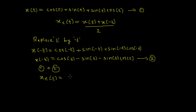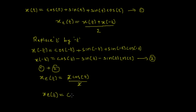xe(t) equals: cosine(t) plus cosine(t) gives 2 cosine(t). Sine(t) minus sine(t) cancels, and sine(t)·cosine(t) minus sine(t)·cosine(t) also cancels. So we get xe(t) equals 2 cosine(t) divided by 2, which simplifies to xe(t) equals cosine(t). That is the even part of the signal.